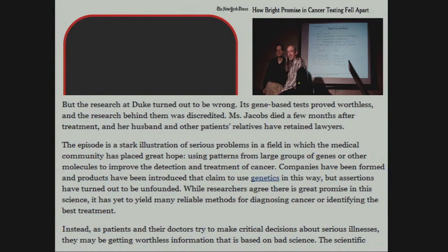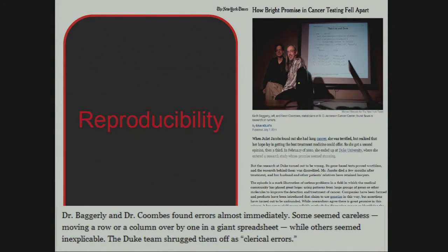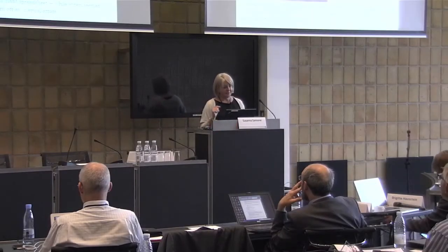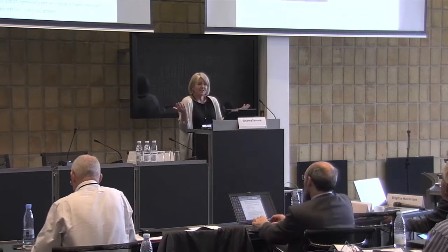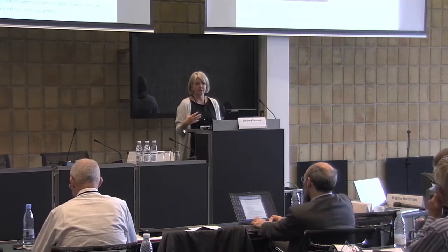Another example is how a promising cancer test fell apart. Researchers at Duke published something which turned out to be wrong, and people died as a consequence. When other colleagues investigated the reason why the data was wrong, they immediately found the error — it was due to data management. A column in an Excel spreadsheet was shifted, and the meaning changed completely. What made it worse was that the group who made this mistake shrugged it off as just a clerical error. Data management is key, and mistakes can have very serious consequences.